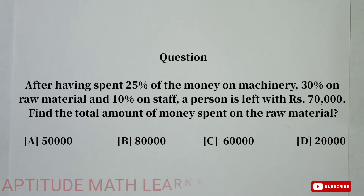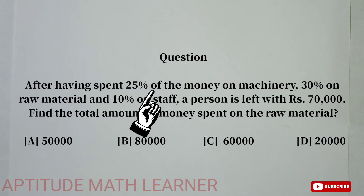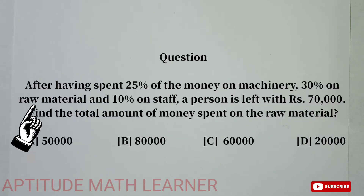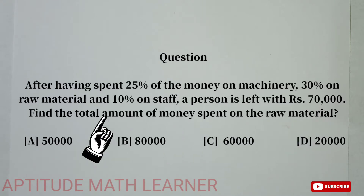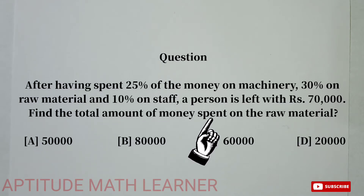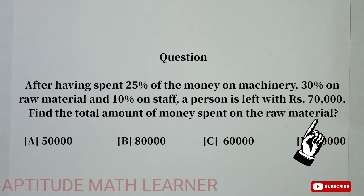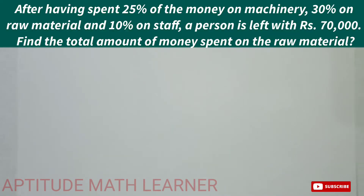Welcome to my YouTube channel Aptitude Math Learner. Today's question is: after having spent 25% of his money on machinery, 30% on raw material, and 10% on staff, a person is left with rupees 70,000. We have to find the amount spent on raw material.